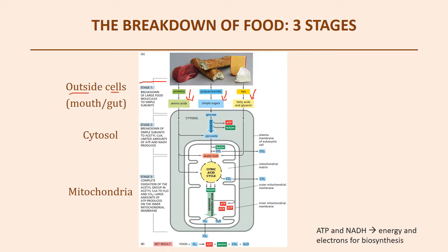Extracellular digestion happens within the lumen of the GI tract. When food molecules are broken down to monomers in the small intestine, absorption occurs — the molecules are small enough to leave the GI tract and enter the cell to begin cellular respiration. Once molecules enter the cell, we move on to stage two, which occurs in the cytosol of the cell — the cytoplasm — and involves taking simple sugars like glucose and breaking them down into pyruvate.